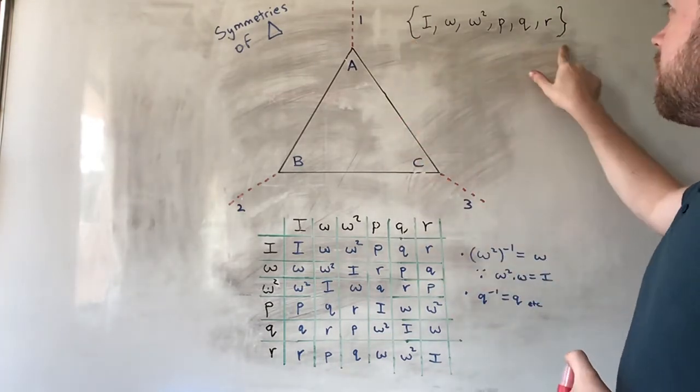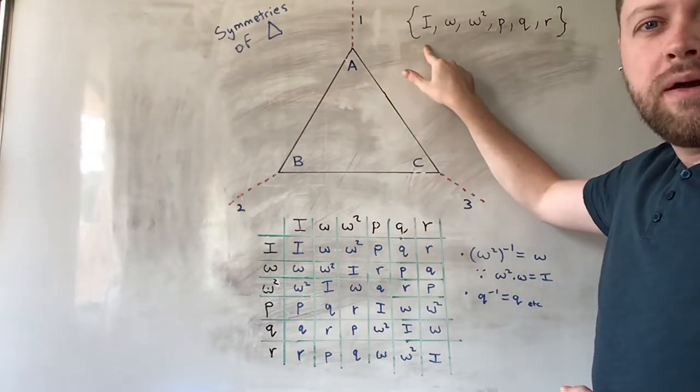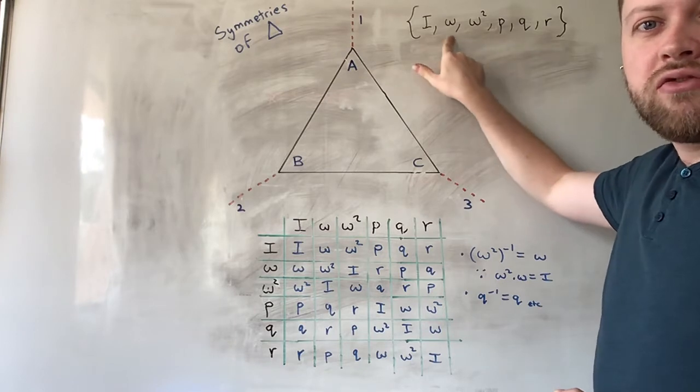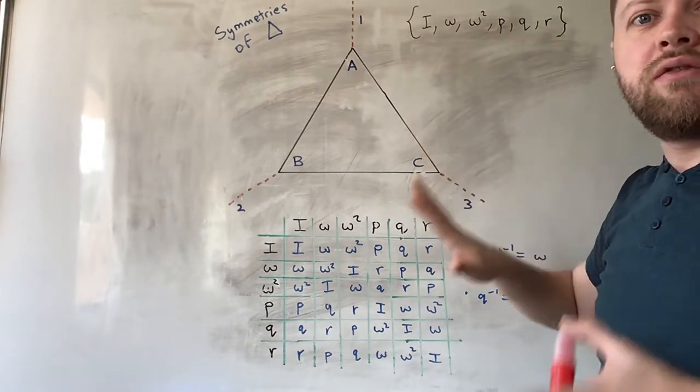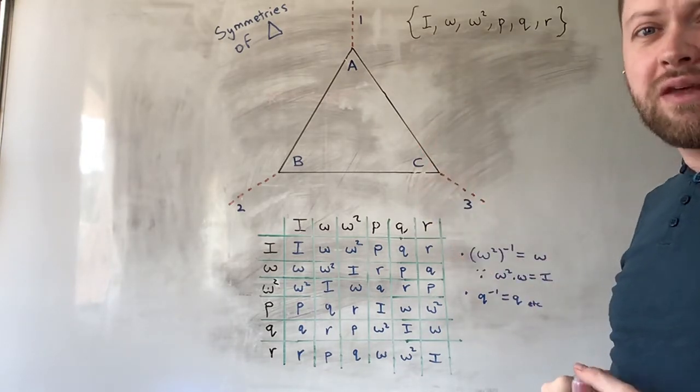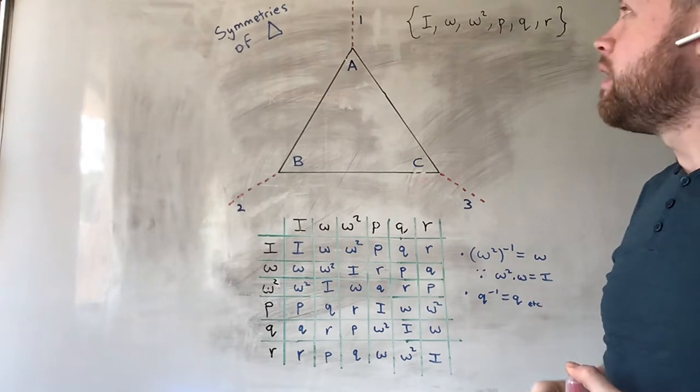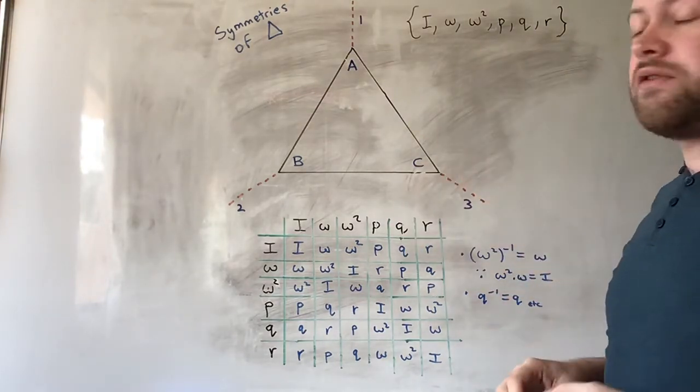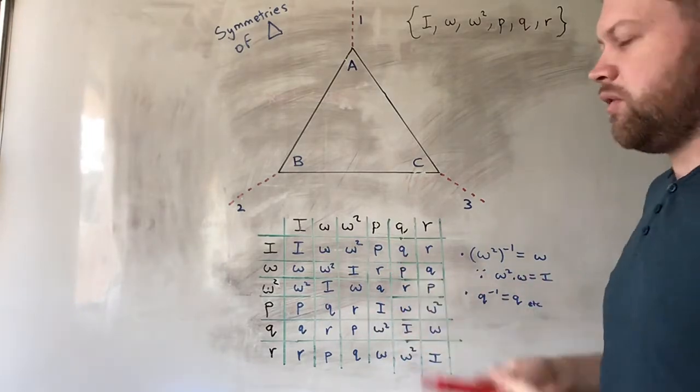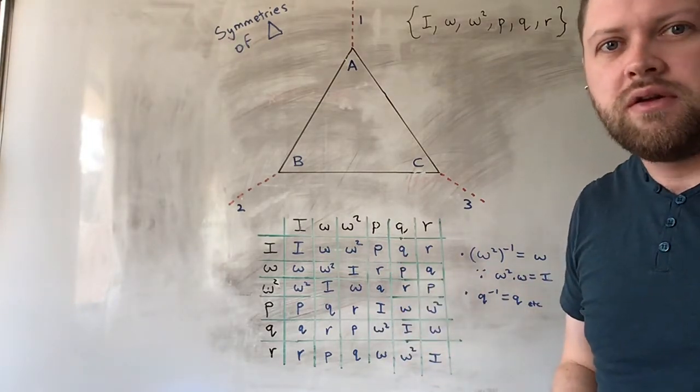So here's the set of all possible transformations of this triangle that leave it invariant. These are the symmetries of this triangle, and this is the group of symmetries, or set of symmetries. We'll examine in a moment whether it's a group or not.